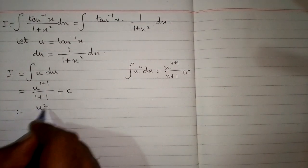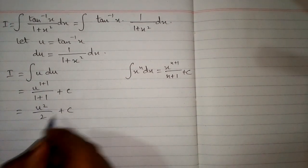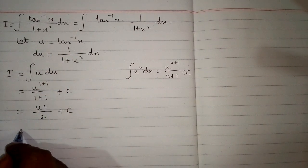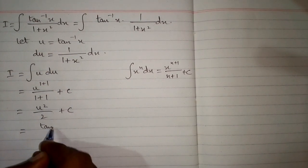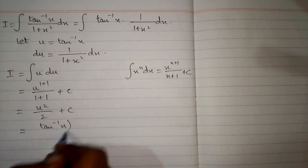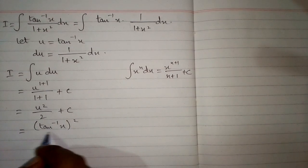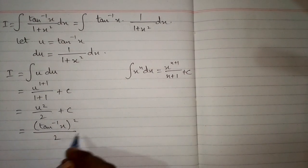Substituting the value of u back, we get tan⁻¹(x) squared over 2 plus c.